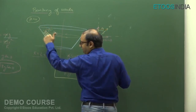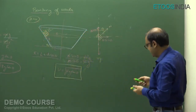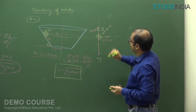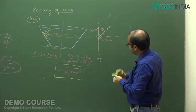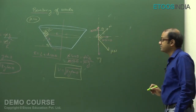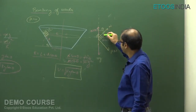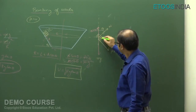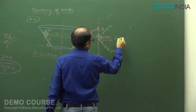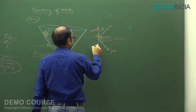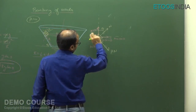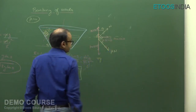Forces acting: downwards we have μN sin theta and Mg; upwards we have N cos theta; sideways towards center we have N sin theta and μN cos theta. Setting net perpendicular force to zero: N cos theta − μN sin theta = Mg. Setting net radially inward force equal to Mv²_max/r: N sin theta + μN cos theta = Mv²_max/r.